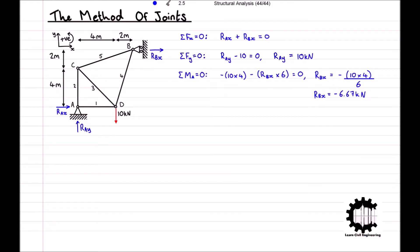Substituting rBx into the horizontal force equation and rearranging for rAx, we get rAx equals 6.67 kN. We can now write these forces onto our diagram: a horizontal reaction force of 6.67 kN acting to the right and a vertical reaction force of 10 kN acting upwards at node A, and a horizontal reaction force of 6.67 kN acting to the left at node B.